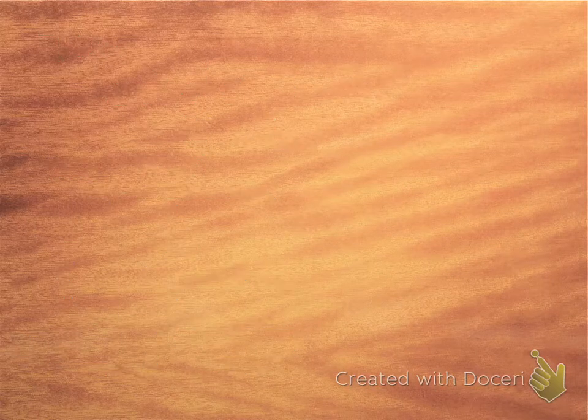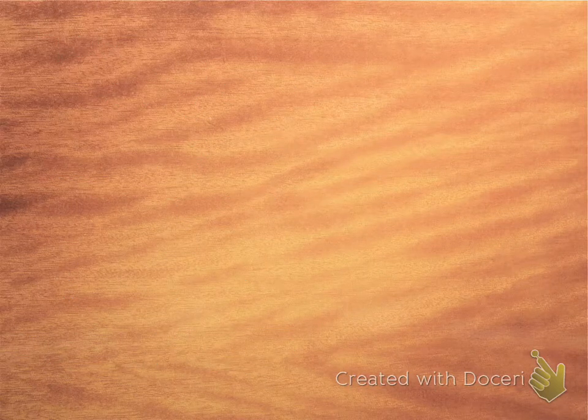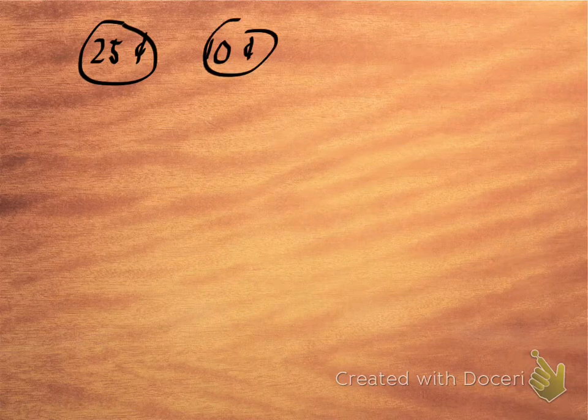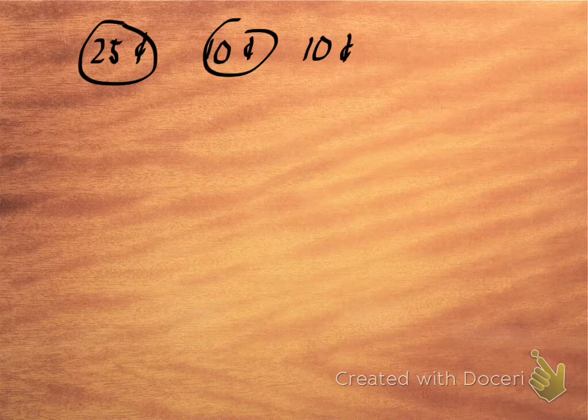Another good example of a type of question that you can use an organized list for is one of those ones where you're trying to come up with all the possibilities. So suppose you have 25 cents. You have one quarter. And suppose you have a dime and another dime and a nickel.